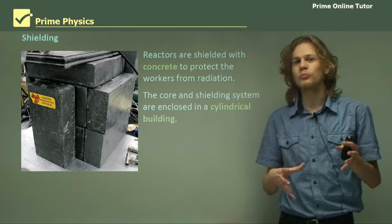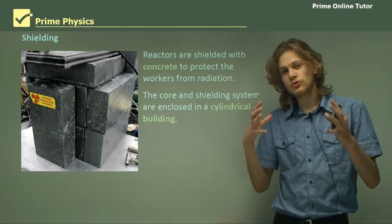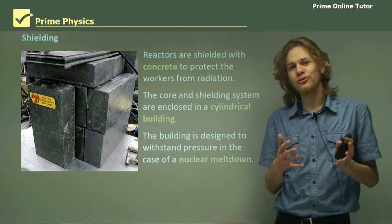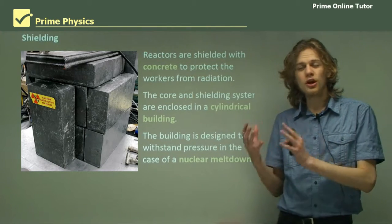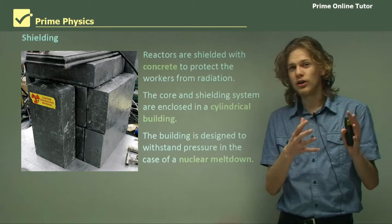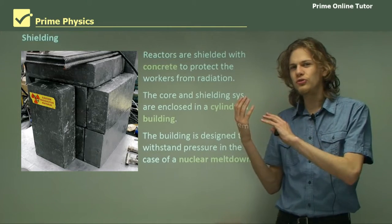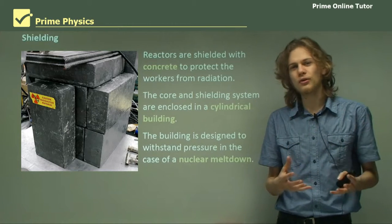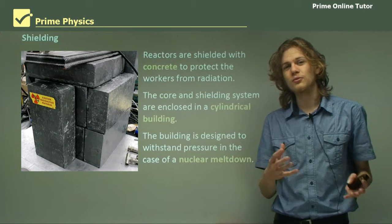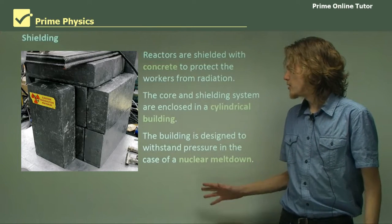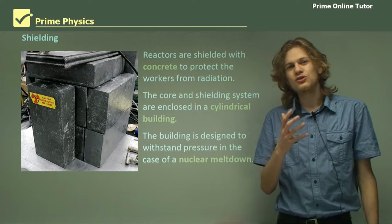The core and shielding system are enclosed in a cylindrical building. The reason for that is because a cylindrical building gives a good solid structure in case there's a nuclear meltdown. If something goes wrong with the coolant and the systems fail, the core may get hot enough to melt the fuel rods and control rods. You won't be able to withdraw or insert control rods to stop the reaction anymore, so the reaction will become uncontrolled. Everything will get very hot and start to melt — you might even get an explosion. A cylindrical building is very good at withstanding these explosions, so if everything goes wrong, at least you're still containing it.